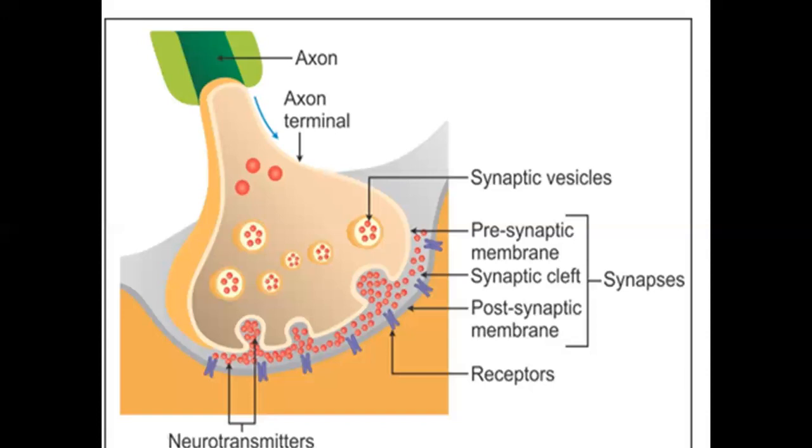Acetylcholine, serotonin, glutamate, GABA are all neurotransmitters. Then there's the pre-synaptic membrane, post-synaptic membrane, synaptic cleft, and receptors. This is the synaptic anatomy.